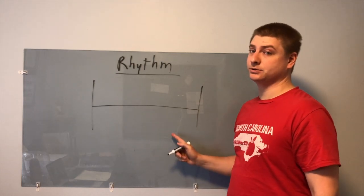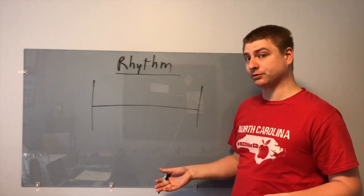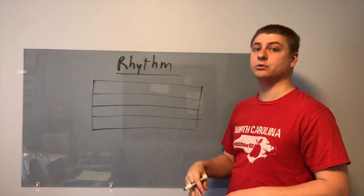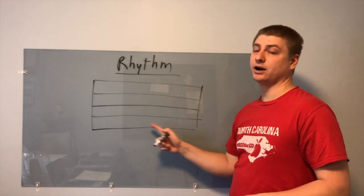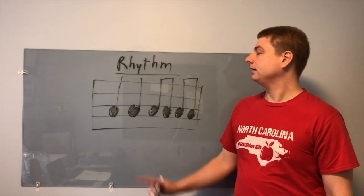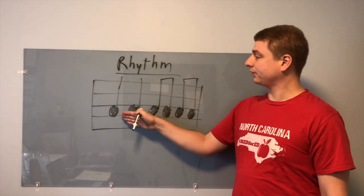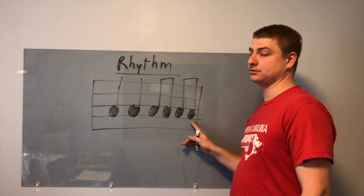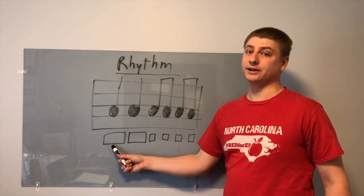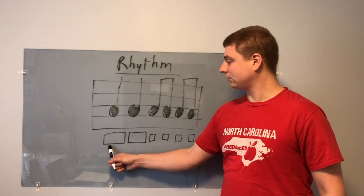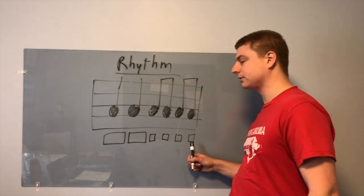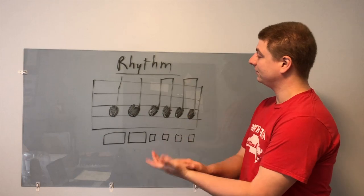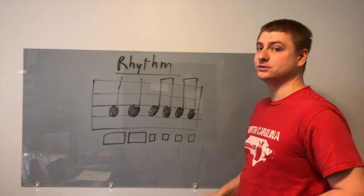Rhythms are written onto music bars. Sometimes for really simple rhythms we can just use one line. Sometimes we want to use many lines to show the different kinds of sounds — this is where pitch comes into play, but that's for a different video. Here's the same rhythm we just played, written with our notes on our music staff. We have two quarter notes and four eighth notes. Here's what that rhythm might look like using our blocks — we have a long block, a long block, and then four short blocks. Let's try clapping this rhythm one more time. One, two, here we go.